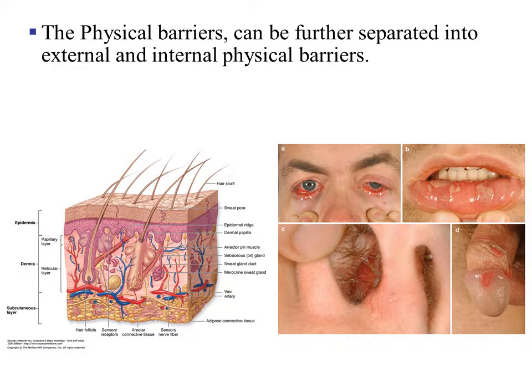The physical barriers can be further separated into the external and the internal barrier. We will discuss the external barrier, which is the skin or the integumentary system, and the internal physical barrier, which is the mucosal lining. The mucosal lining makes up things like the inner portion of your oral cavity.